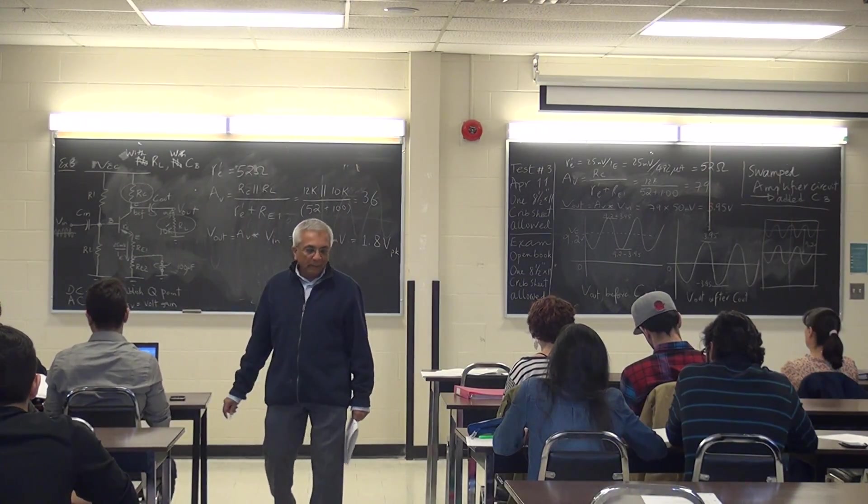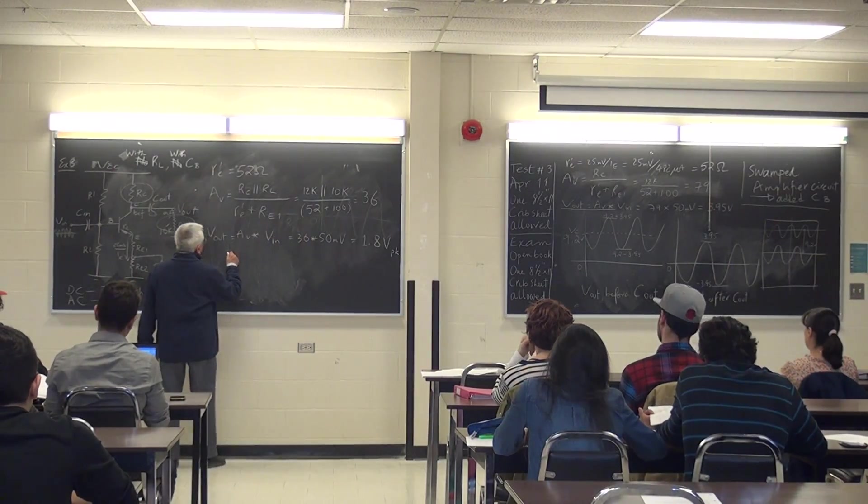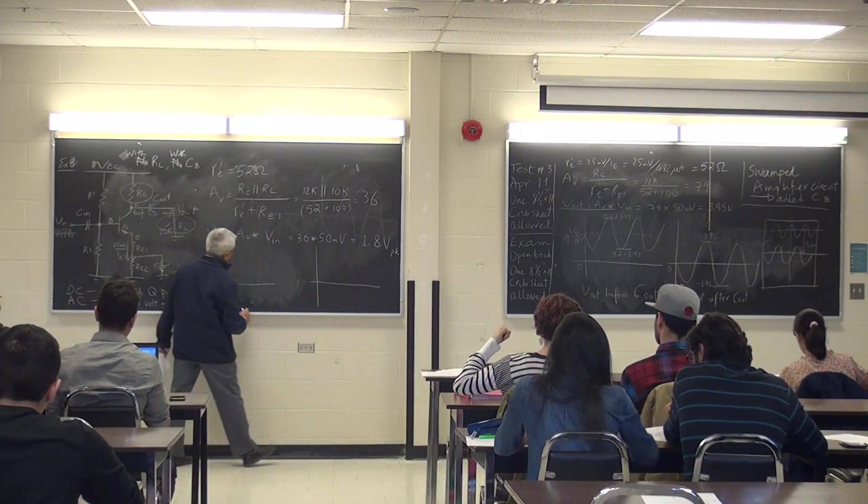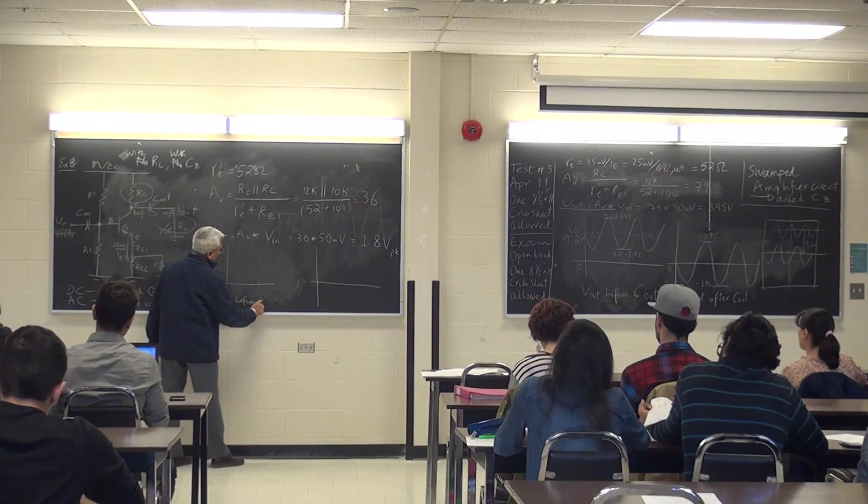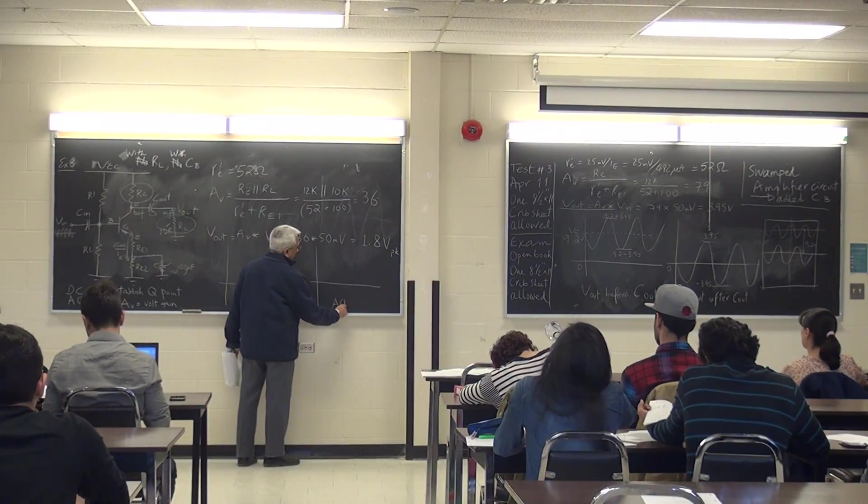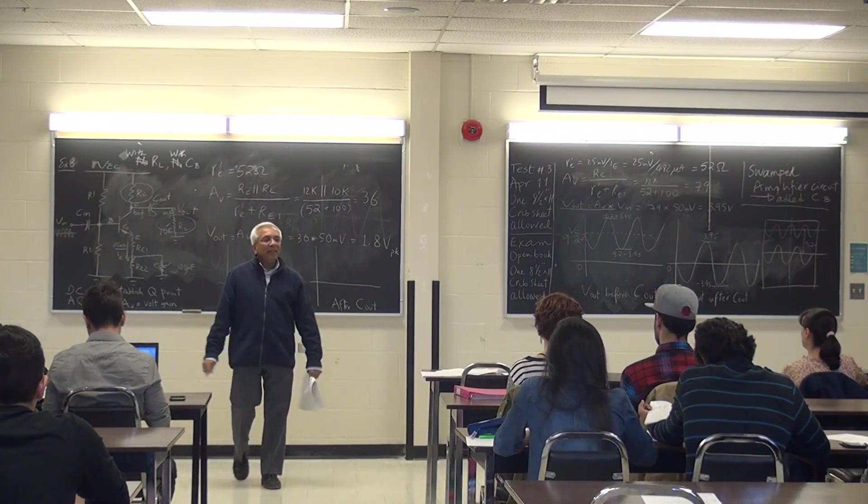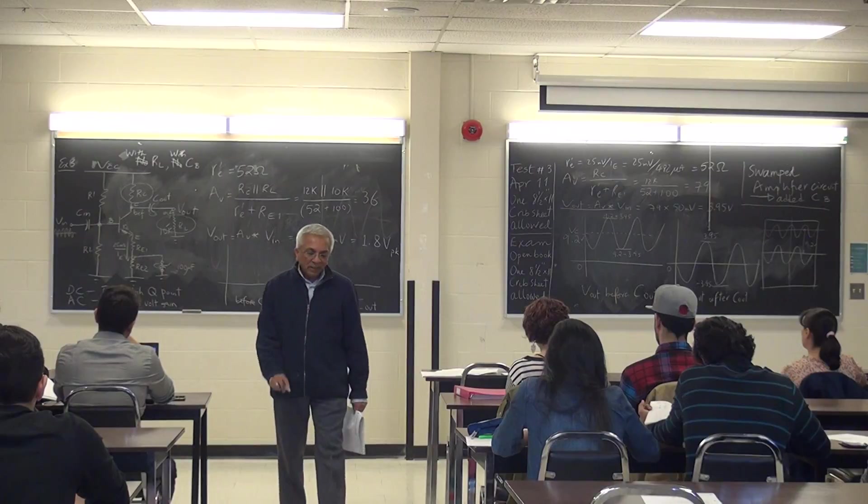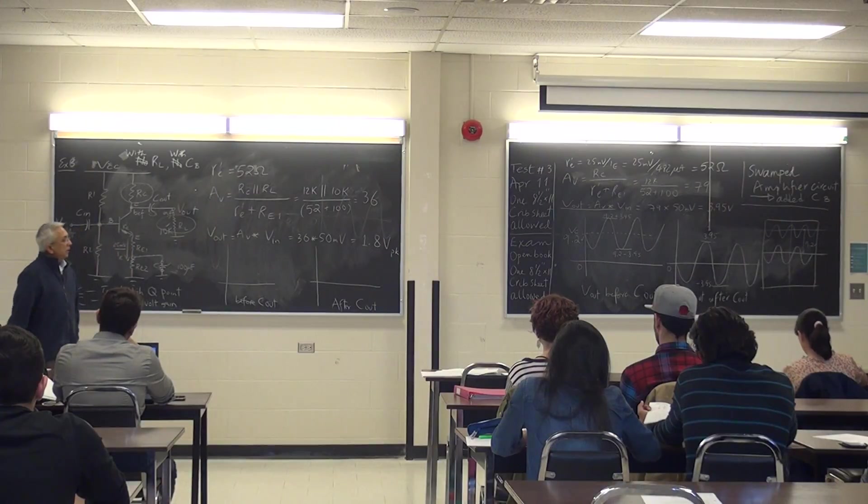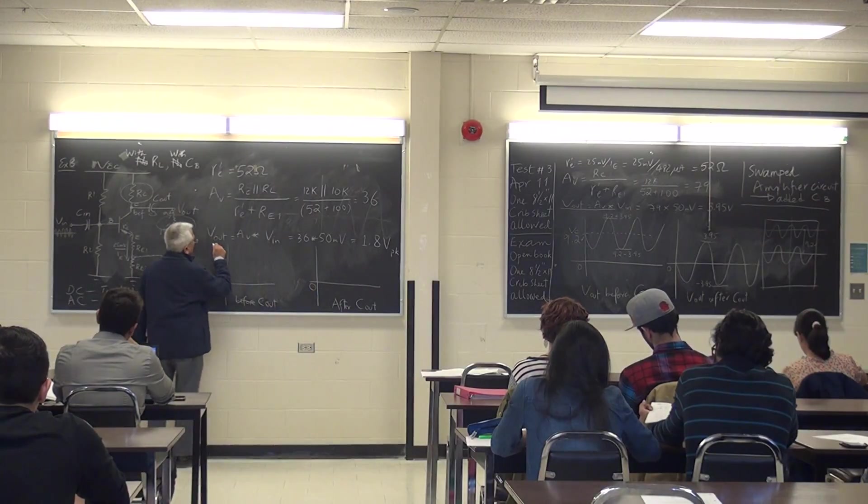So now I draw my two graphs, before and after C out. Before C out, after C out. I'm mainly interested in the value after C out, not really before C out. Before C out is just learning about what is happening to that voltage in the circuit. Show the zero. This is V out.